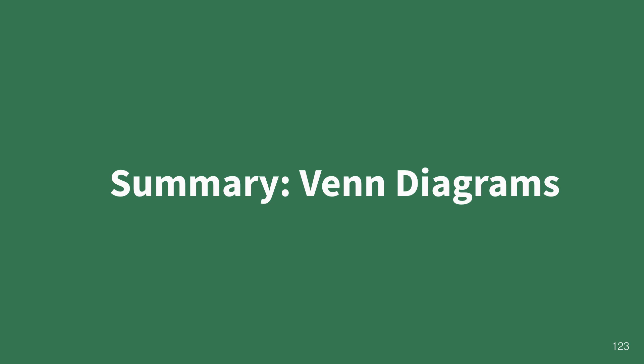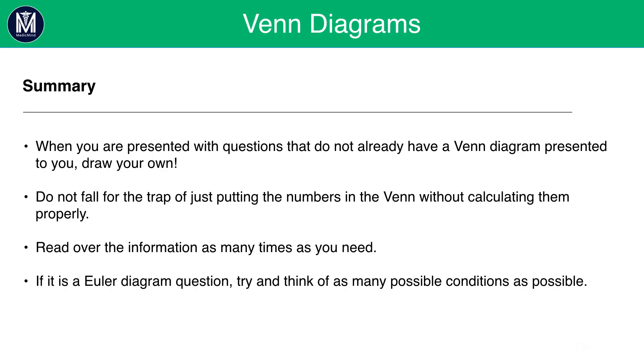Let's do a summary now of everything we've learnt on Venn diagrams. When you are presented with questions that do not already have a Venn diagram presented to you, draw your own. Do not fall into the trap of just putting the numbers in the Venn diagram without calculating them properly. Read over the information as many times as you need. Now, I understand there's only one minute per question, but if you feel like a question has a lot of information and you don't understand it, flag it and come back to it at the end. And if it is a Venn diagram question, try and think of as many possible real-life conditions as possible. There's going to be loads of different objects. Try and think of how they relate in any sort of way.